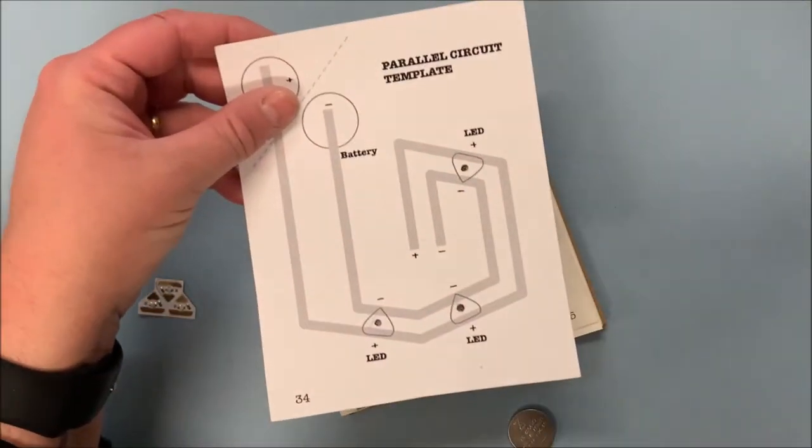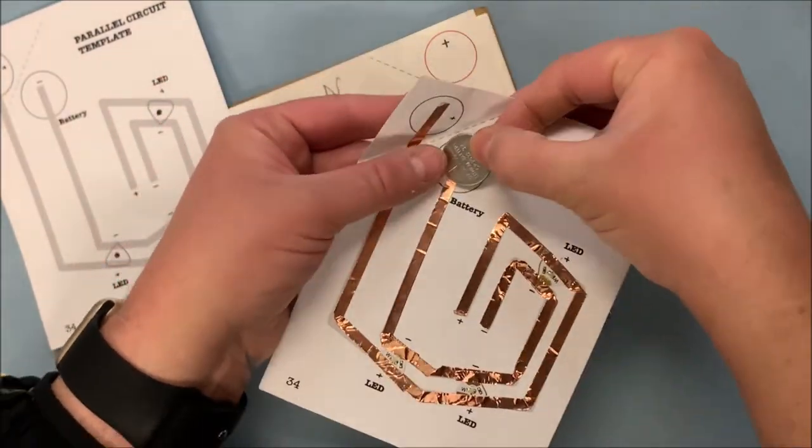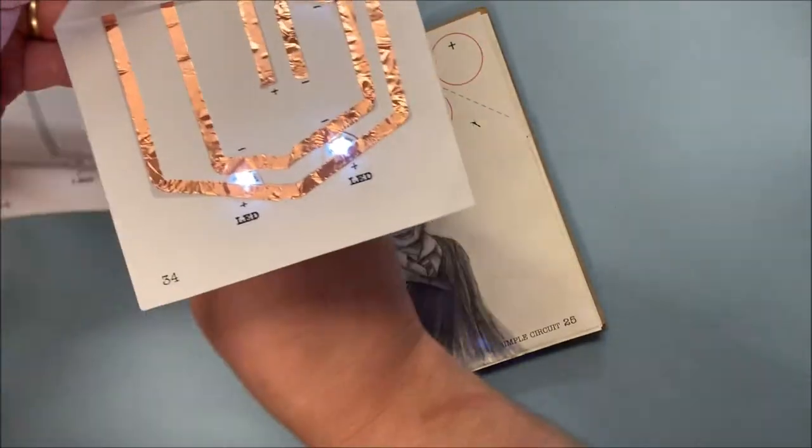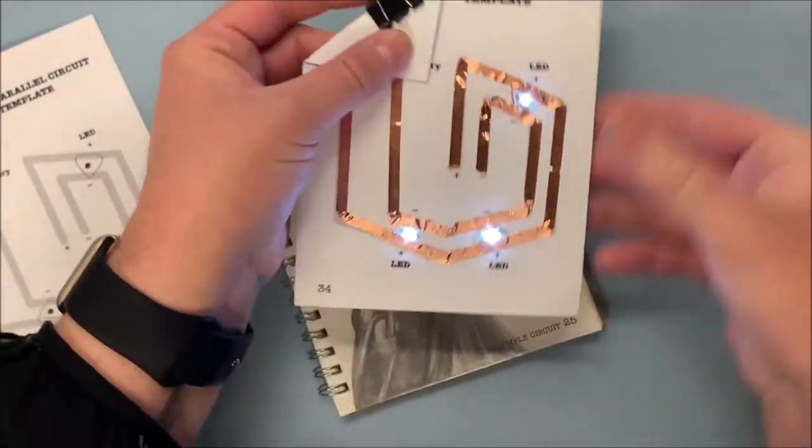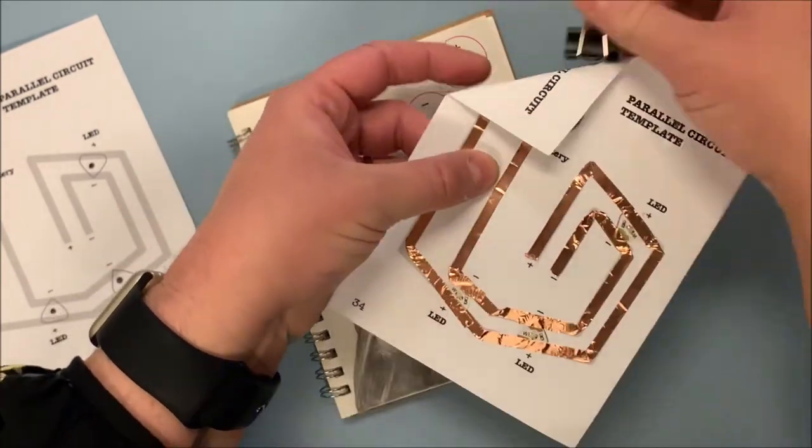When you put them together on the template like this, you add your coin cell battery in, fold the corner over, and use a binder clip to clip it closed. You now have an LED light sticker.